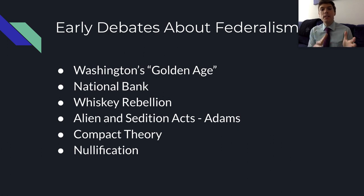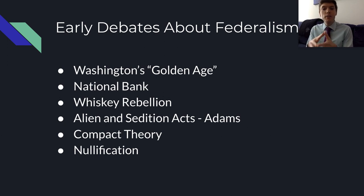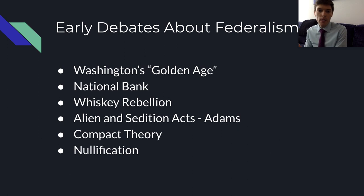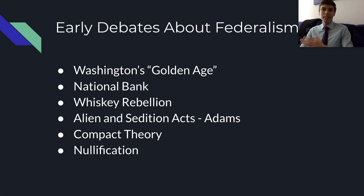One of the first issues that arose was the creation of the National Bank. Washington asked both Jefferson and Hamilton their opinions. Jefferson's argument against the bank was that it was improper because Congress did not have the power under the Constitution to create it. He argued that the Constitution should be interpreted more strictly — strict construction — and that if the Constitution did not permit it, it would not be allowed. Hamilton, in contrast, believed that since the Constitution did not explicitly forbid a national bank, it should be permitted.